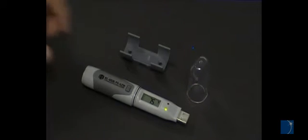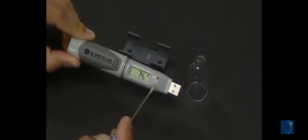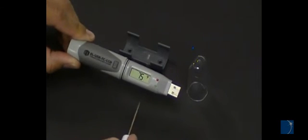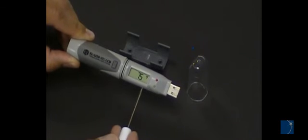EL-USB loggers use LEDs to indicate when data is being recorded or when an alarm level has been breached. Some EL-USB loggers include an LCD display, while others do not.